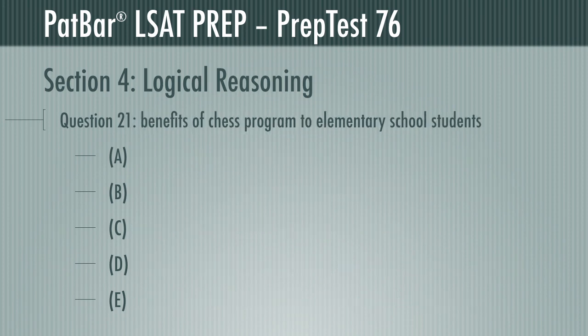Question 21 presents the results of an experiment at a large elementary school: the students who completed the program in which they learned to play chess did better afterward in all of their schoolwork. The conclusion drawn by the passage is that the reasoning power and spatial intuition learned by these students was of benefit in other intellectual activity. Of the five responses, you are to choose the one that would most strongly weaken that conclusion.